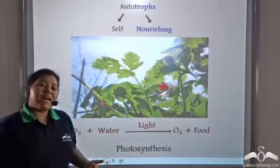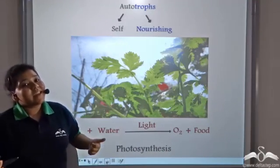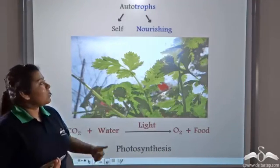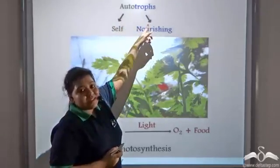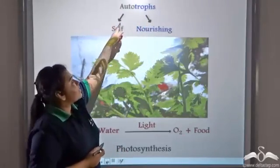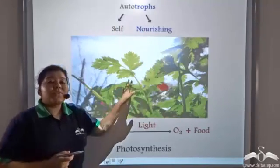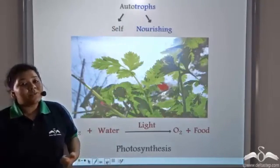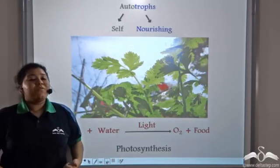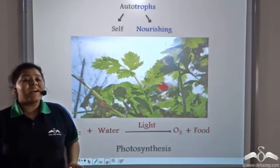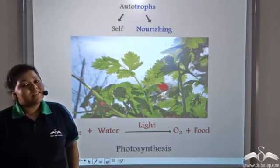Now since green plants can manufacture their own food, they are known as autotrophs, where auto means self and trophs means nourishing. So green plants are the producers of food on which the entire mankind and animals survive on.